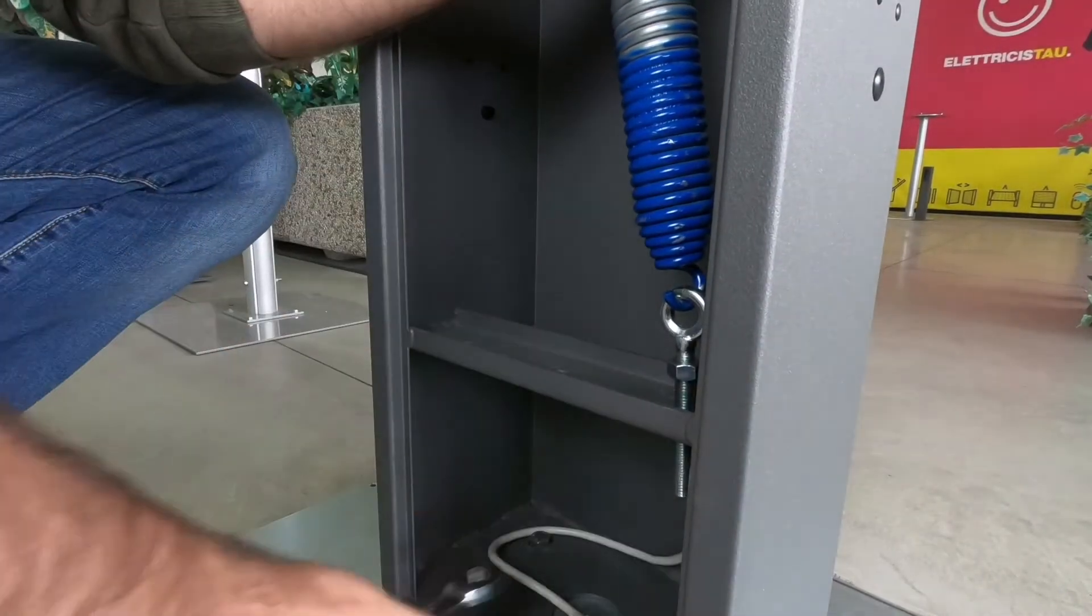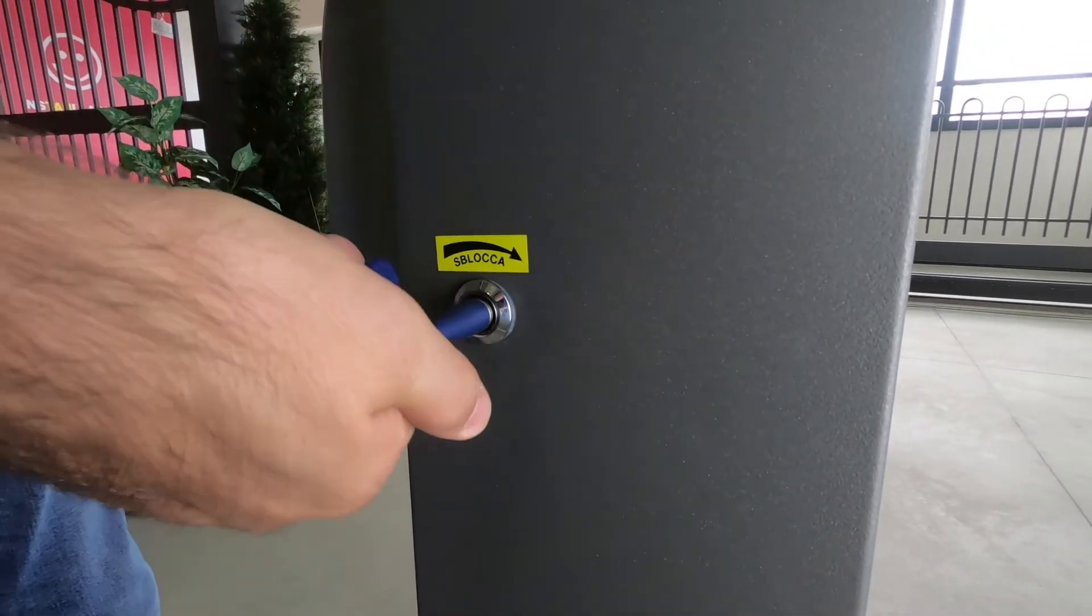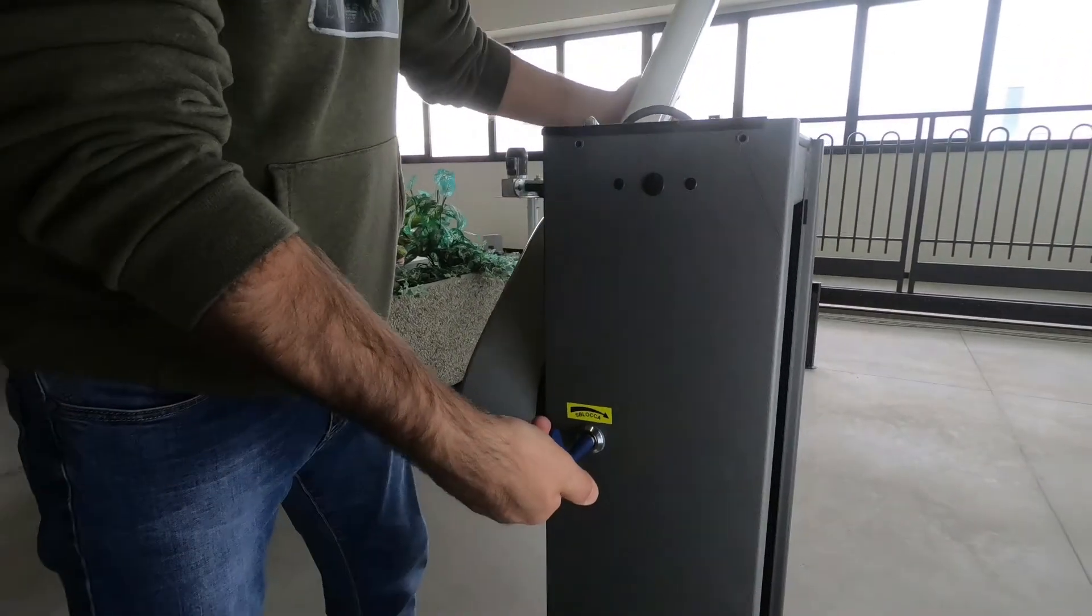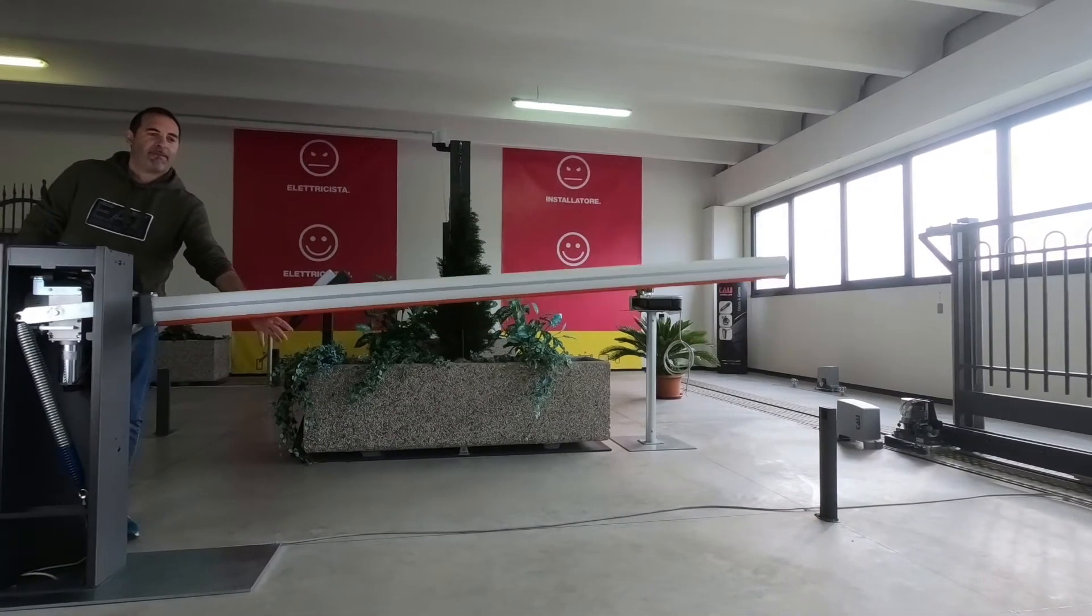To check if the spring has been correctly loaded, unlock the boom using the key and lower it manually until it's completely closed at zero degrees. When releasing the boom, it will have to raise itself and stay at about 45 degrees.